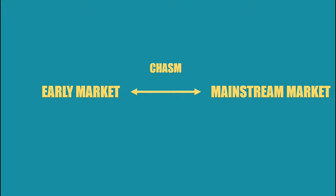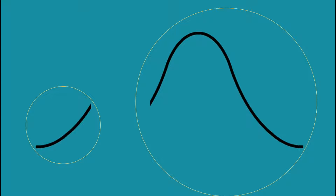These are the visual representations of early markets and mainstream market. The reason a lot of companies cannot reach the mainstream market is because they get used to how business gets done in the early market and do not realize the vast difference between these two groups. These circles are a good representation of the sheer size differences between the two groups. In order to actually cross the chasm, you have to know how each of these markets behave.